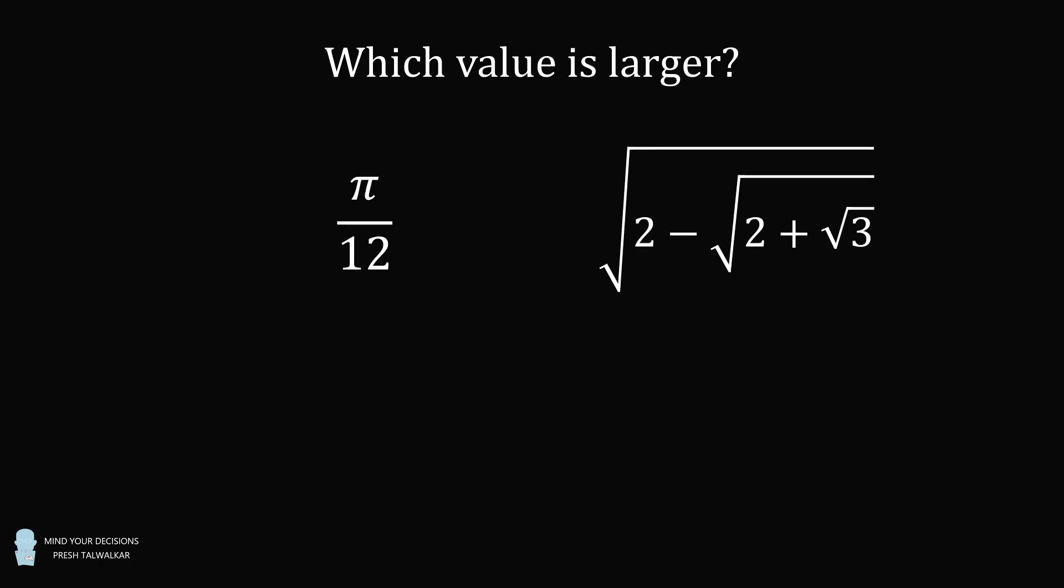Hey, this is Presh Talwalkar. Here's a fun little problem. Which value is larger? Pi over 12? Or this nested radical? We have the square root of the quantity 2 minus the square root of the quantity 2 plus root 3.